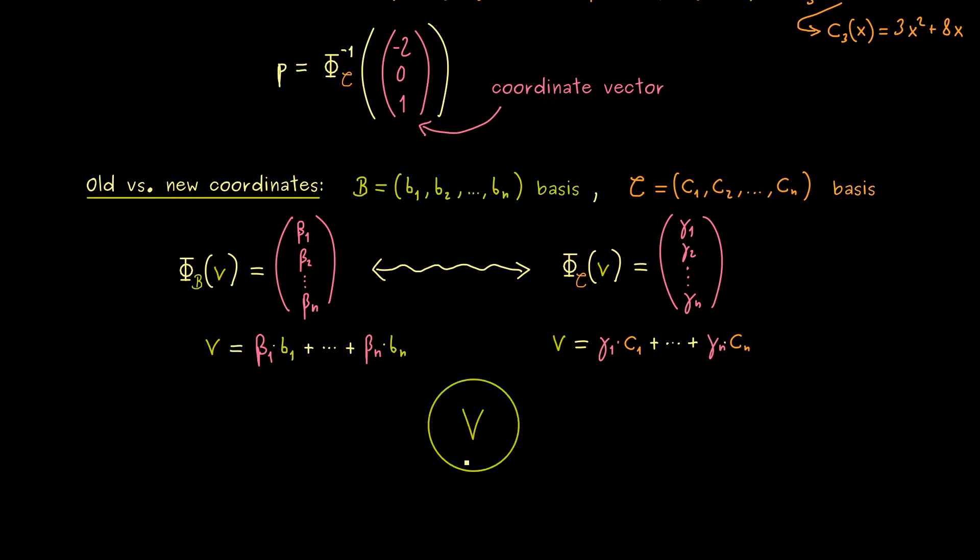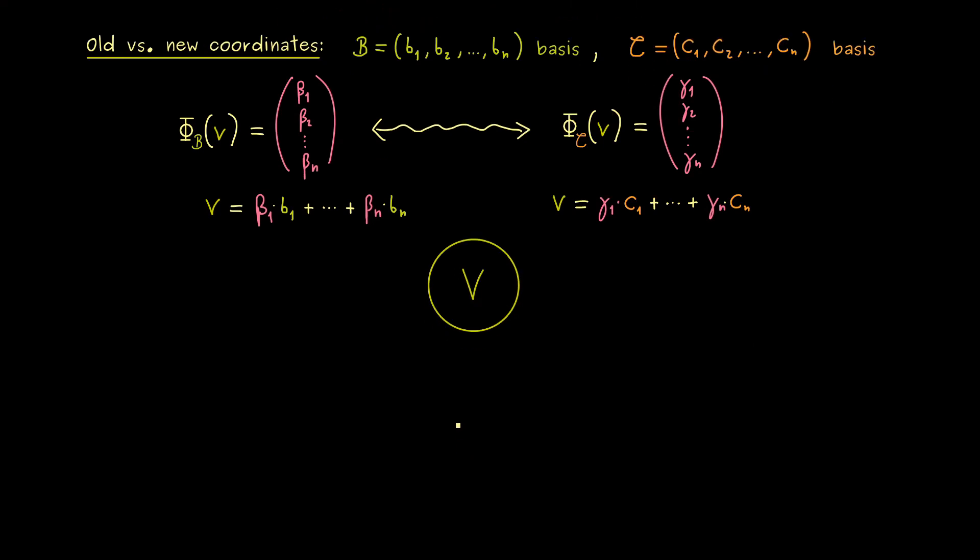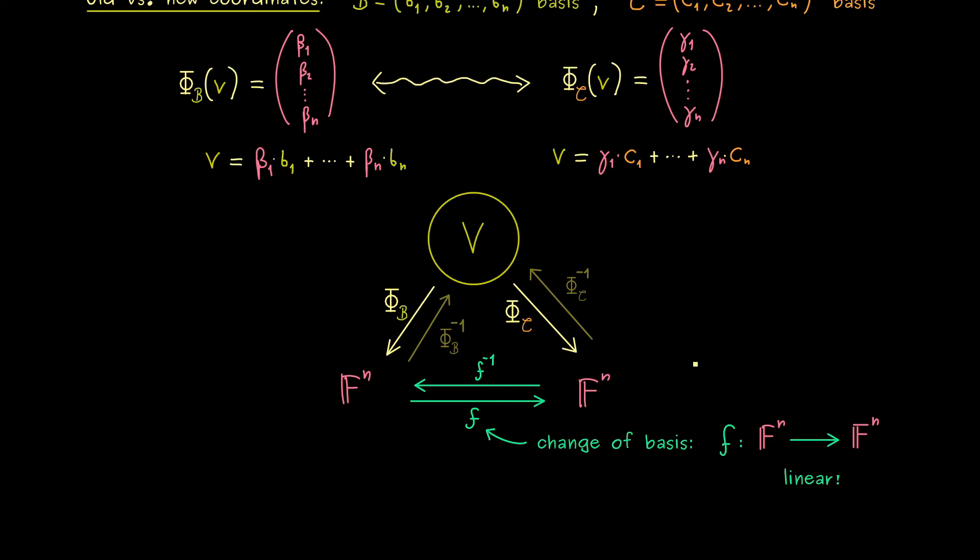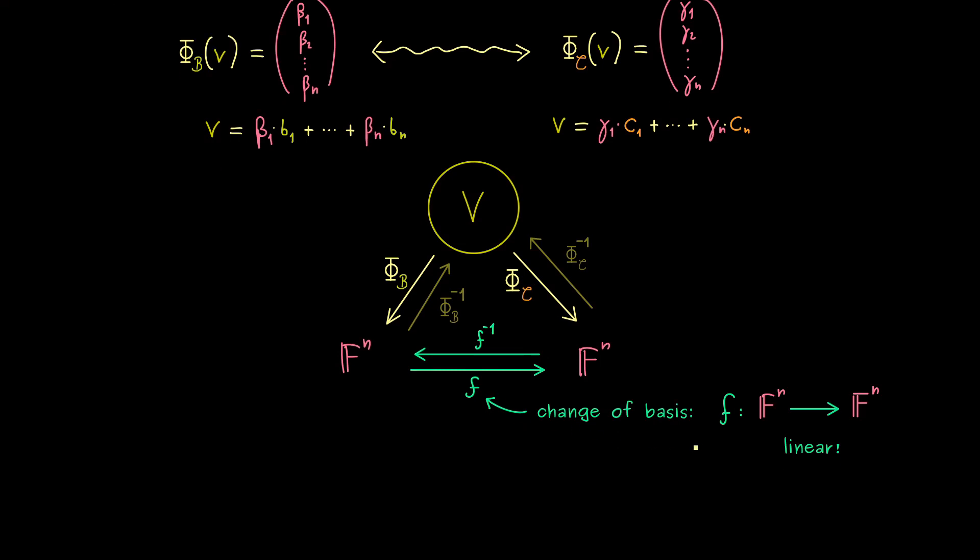There is our general vector space V and then we can go to the concrete level with the basis isomorphism. And moreover we also know we can always go backwards with the inverse. But as I said before we don't want to do that all the time because we want to stay at F^n and calculate in F^n. Therefore if we change the basis from B to C we want to go directly from F^n to F^n. And maybe let's call this map lowercase f. And from the discussion before we also already know we can always go backwards. So we also have the inverse. Indeed we already know this map f we call the change of basis. And obviously it has to be a linear map. So it's a linear map from F^n to F^n and it's also bijective.